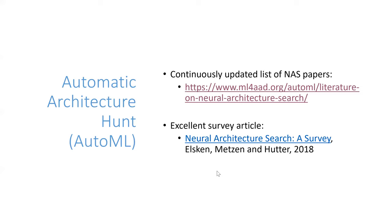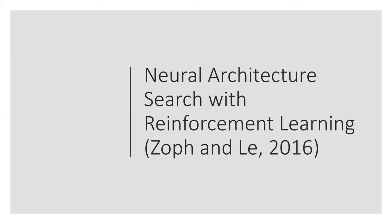I would also recommend this survey article. If your interest gets peaked after the class, this gets continuously updated — even though it was initially published in 2018, they keep updating it, and I think it just got updated a month or two ago. It's an excellent survey for a deeper introduction. And this was actually the paper on that list which I credit for restarting the interest in architecture search: around 2016, there was this paper by Zoph and Baradzoff and Zoph from Google Research, which used reinforcement learning to do neural architecture search.